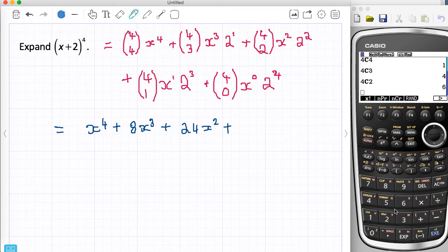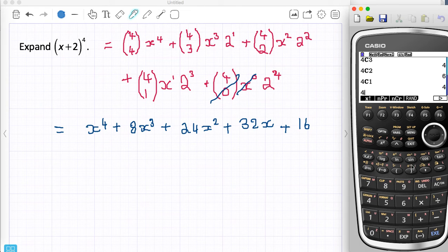The next number, 4c1 is 4. It's kind of symmetrical. It's going to give me 4. 2 to the power of 3 is 8, so it's going to give me 4 times 8 are 32, and an x. This is 1, this is 1, so it's 2 to the power of 4, which is 16. Just to confirm that, 4c0 is 1.